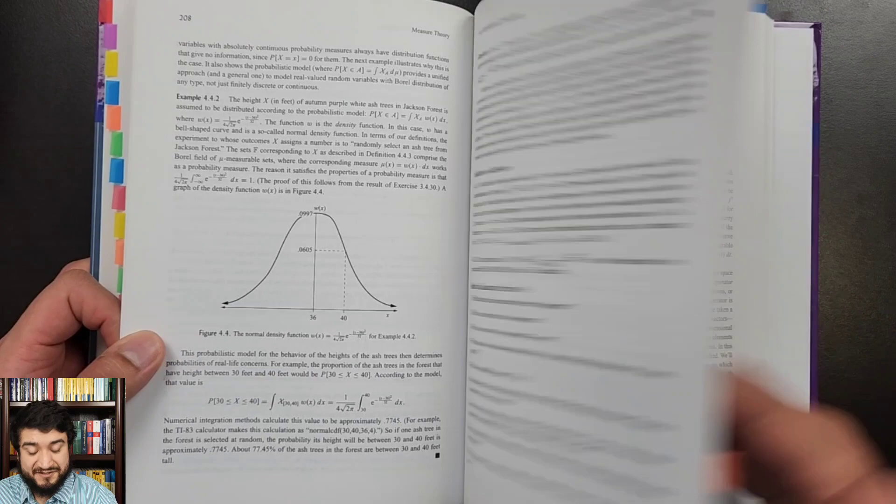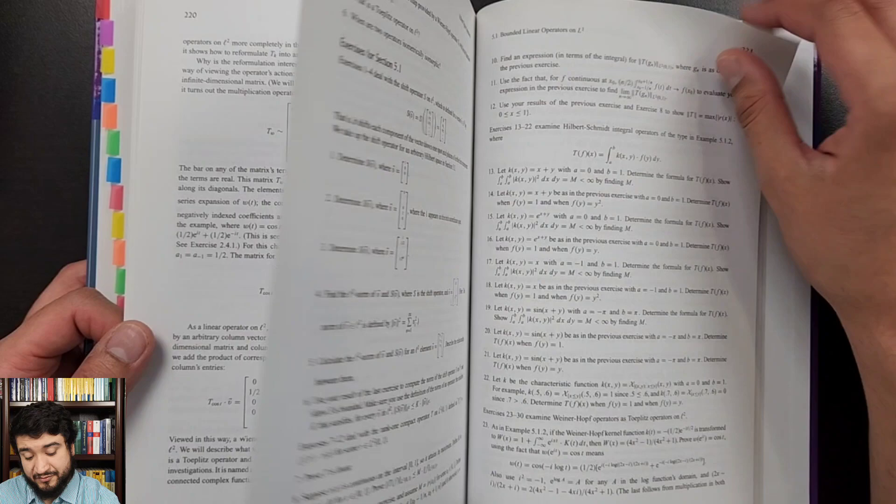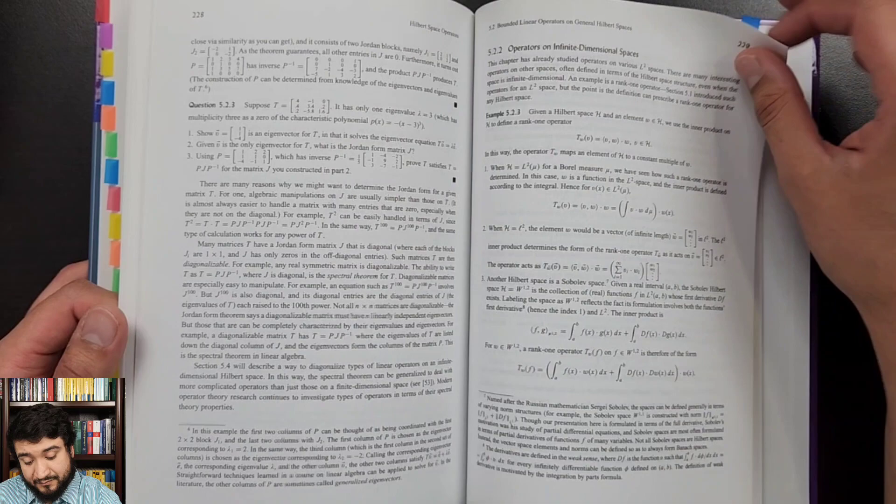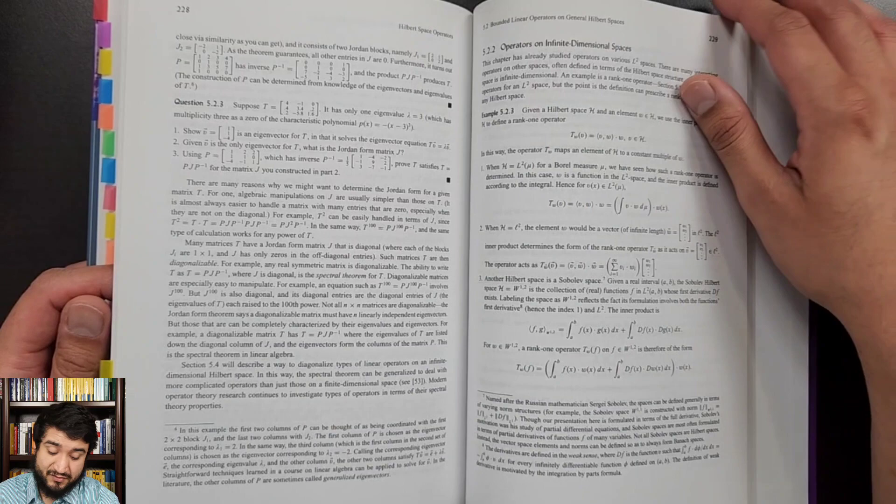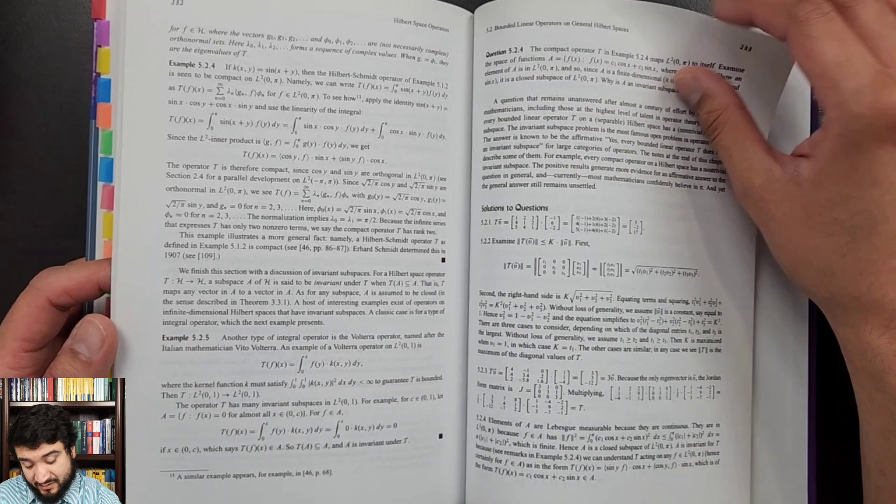But here we go, chapter five, Hilbert space operators. So as you can see here, the author goes over a lot of stuff really from measure theory and functional analysis. This is really cool. Operators on finite dimensional spaces. So again, this chapter here is one that the physicist would enjoy for wherever you might need quantum or functional analysis or the notion of the operator. This is something I see again mostly in quantum mechanics.